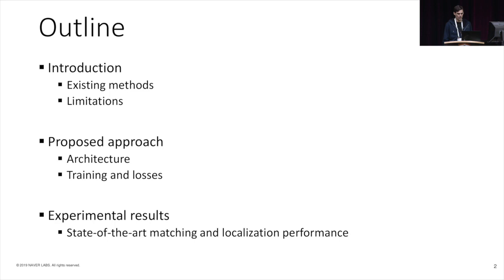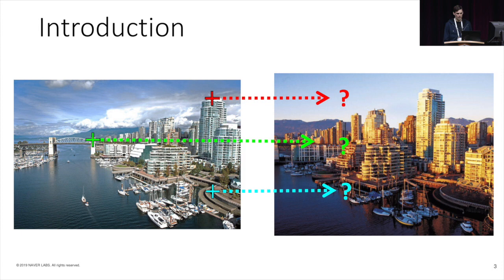So first, I will present the problem we are interested in, which is about finding pixel correspondences between images. For instance, we would like to know where the red cross from the left image should be in the right image. And this is important for many applications like visual localization, pose estimation, or 3D reconstruction.